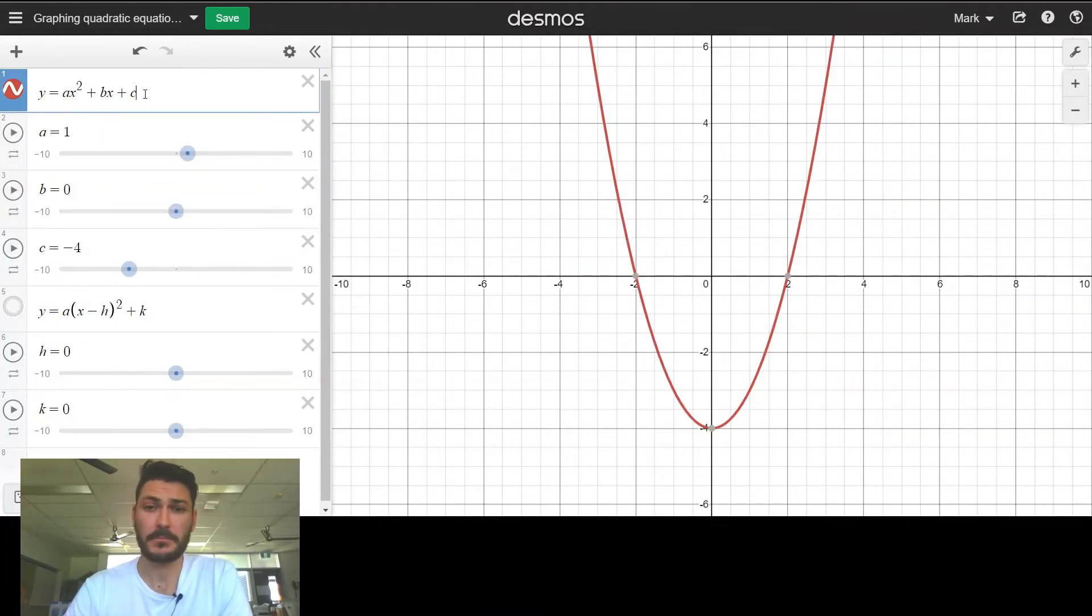Another big benefit of having it in this form—ax squared plus bx plus c—is that we know how to factorize this. If we can't factorize it, we can complete the square. If we can't complete the square, we can use the quadratic equation in this form. We can find x-intercepts pretty easily using this form of the equation, so that's also useful.